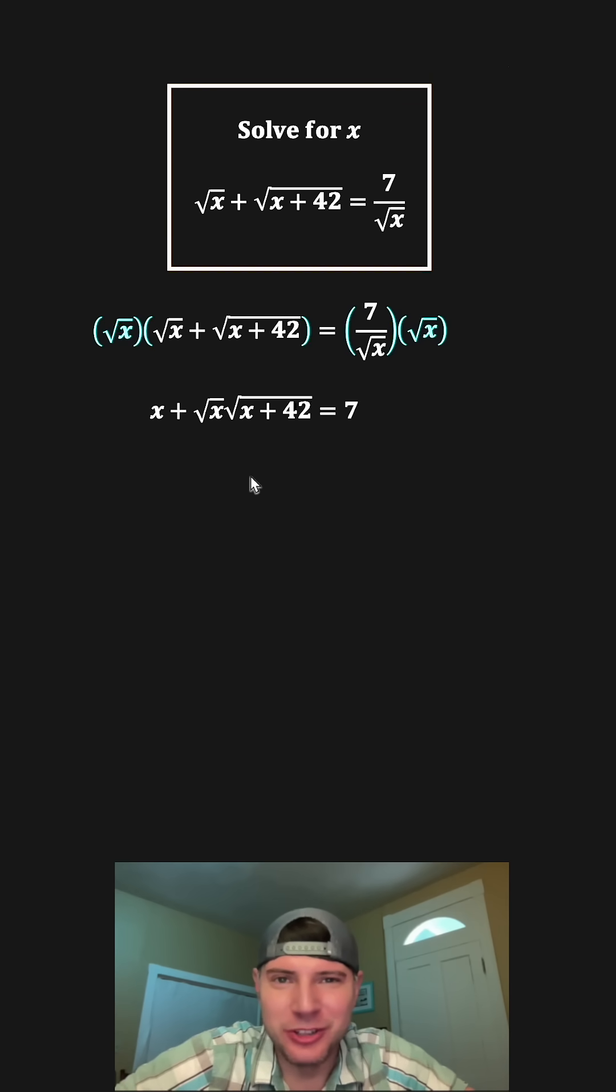Next, let's get these square roots alone on this side. Let's subtract x from both sides. On the left-hand side, these x's cancel each other out, so we're left with these two roots. And then on the right-hand side, 7 minus x is 7 minus x.